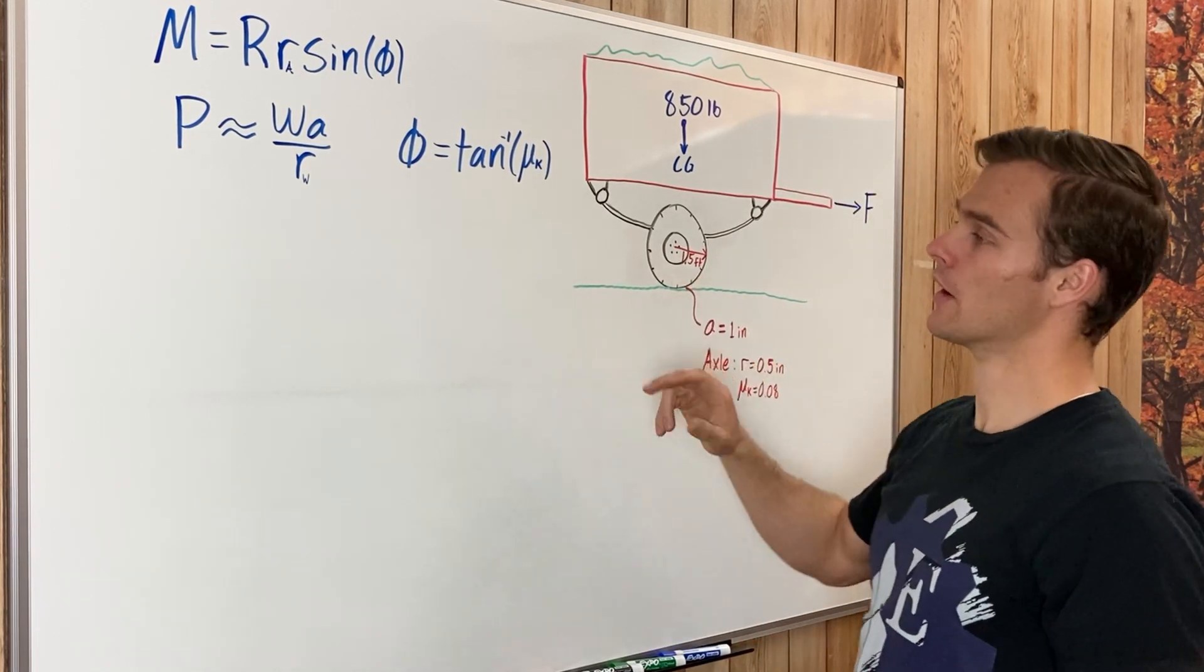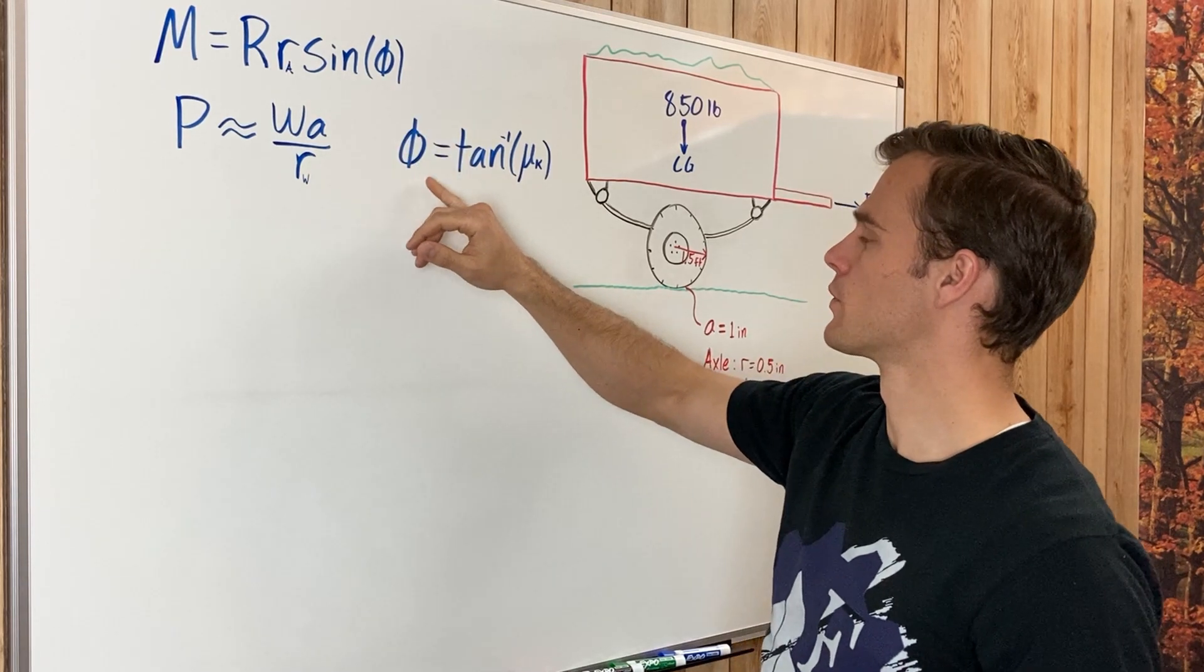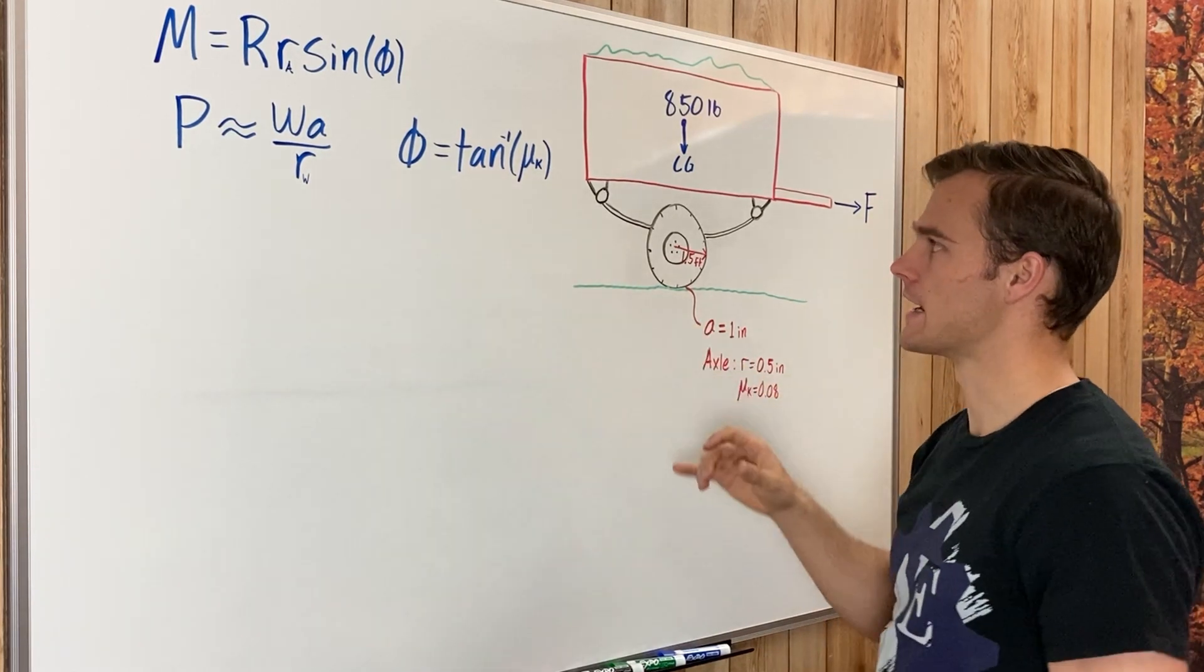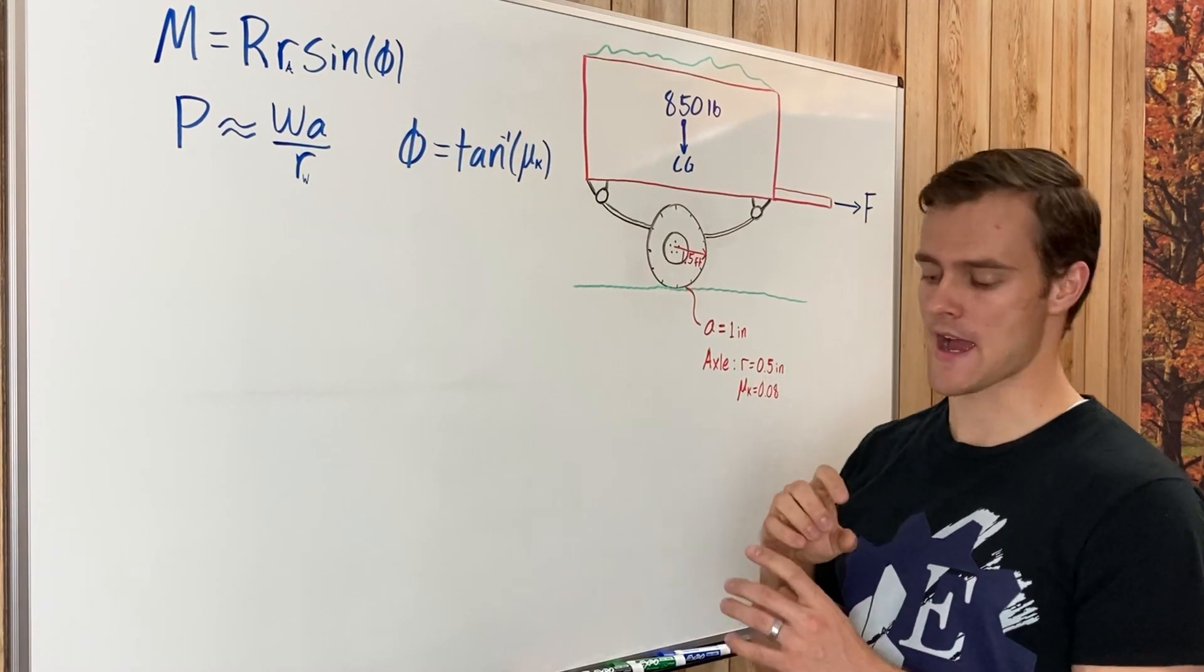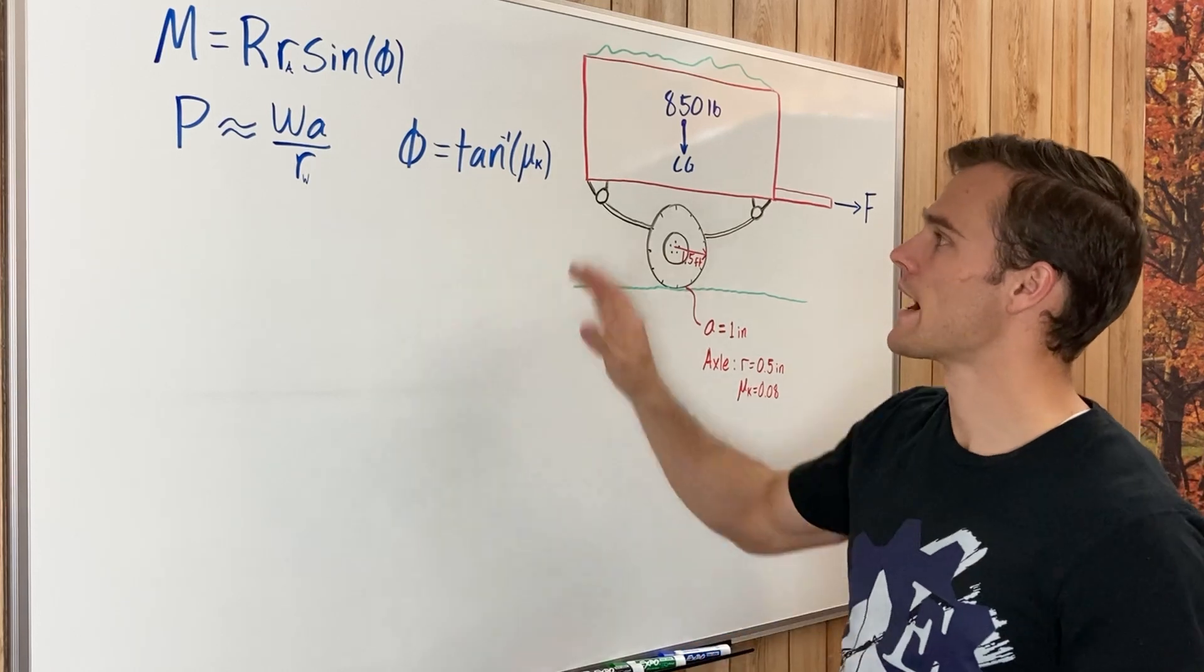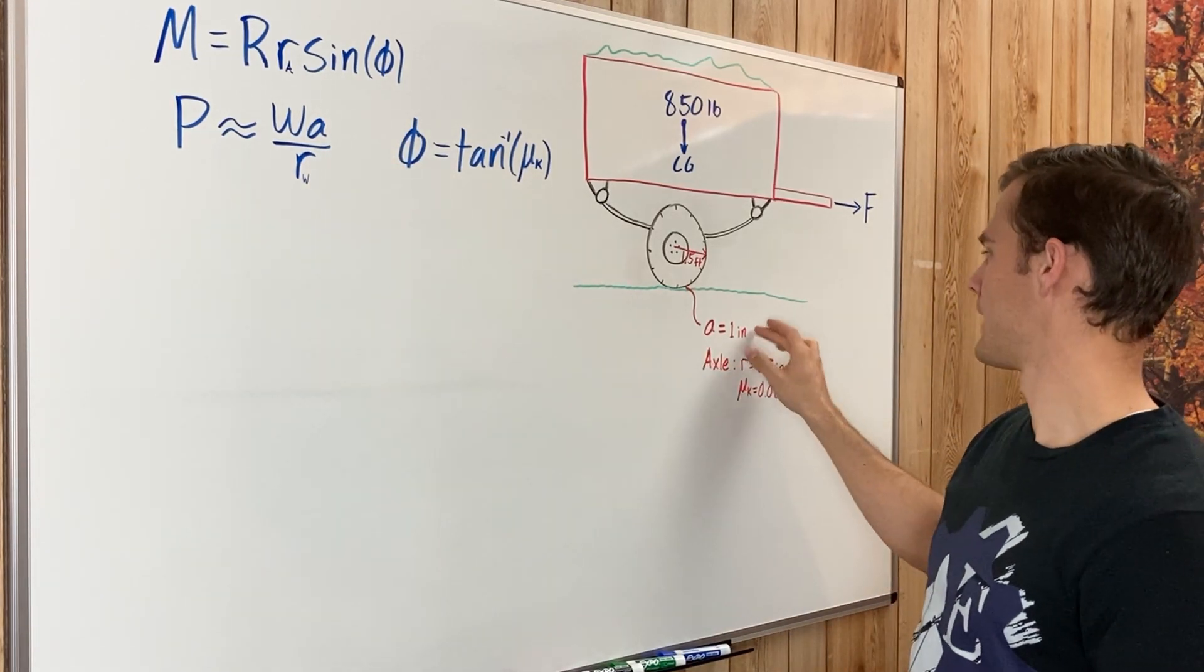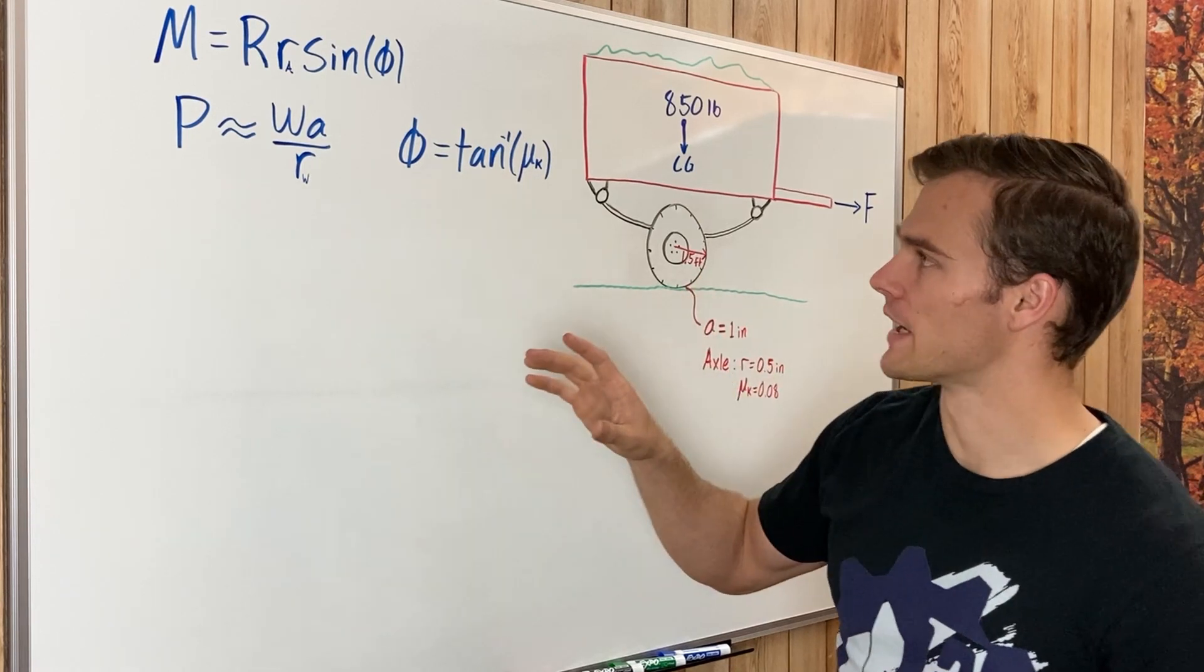Then we have phi, which is the arc tangent of the coefficient of kinetic friction. That kinetic friction is between the collar and the axle in those journal bearings. And a is the coefficient of rolling friction, which is one inch. So we have all those variables.